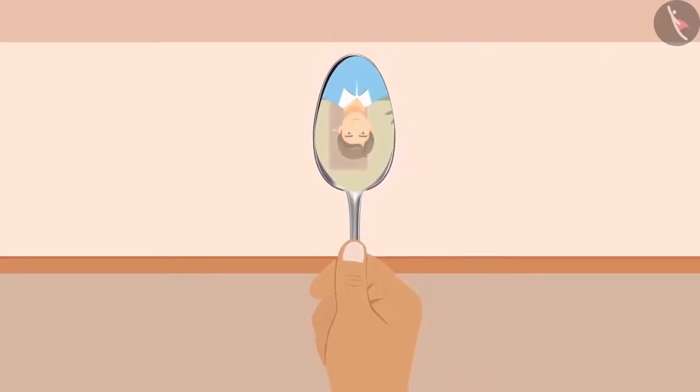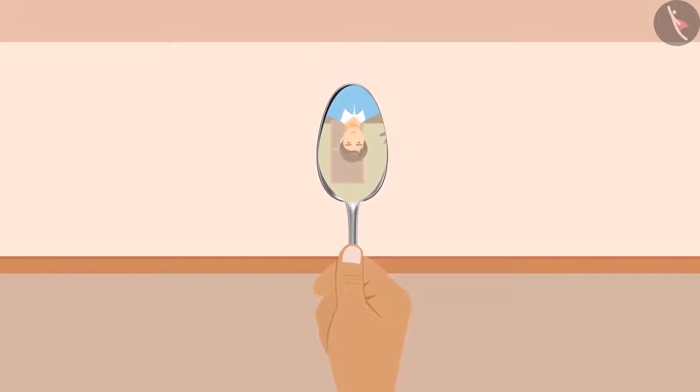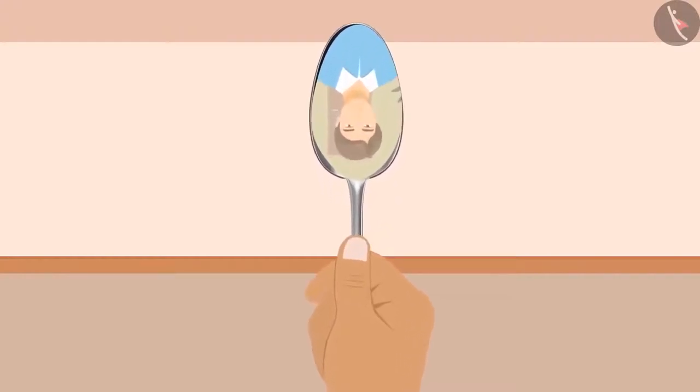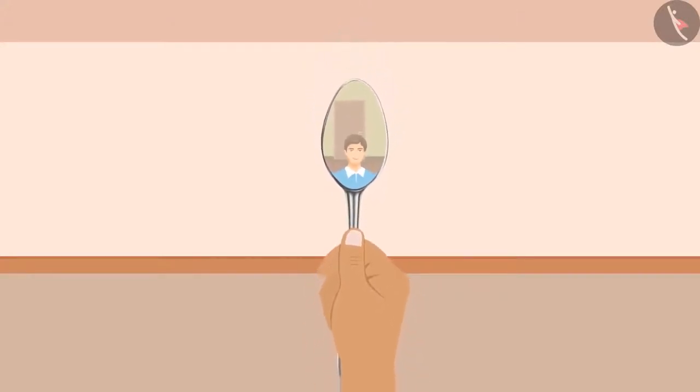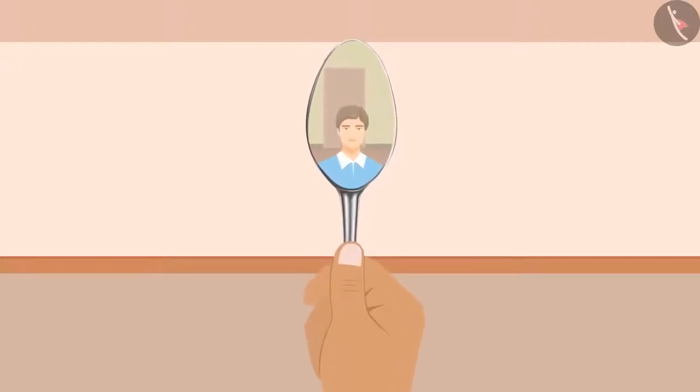Hey! As I am taking the spoon away, the size of my image is getting smaller. What? Why is my image inverted in the spoon? What if I turn the spoon over? Here also the size of the image is getting smaller but it is erect, not inverted as it was in the first case.